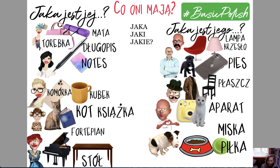Now we've got a cat and a book. The cat is light brown and the book is navy blue. Jaki jest jej kot? Light brown — jej kot jest jasno-brązowy. Jaka jest jej książka? Jej książka jest granatowa. So brązowy with a Y ending, and książka — granatowa with an A.